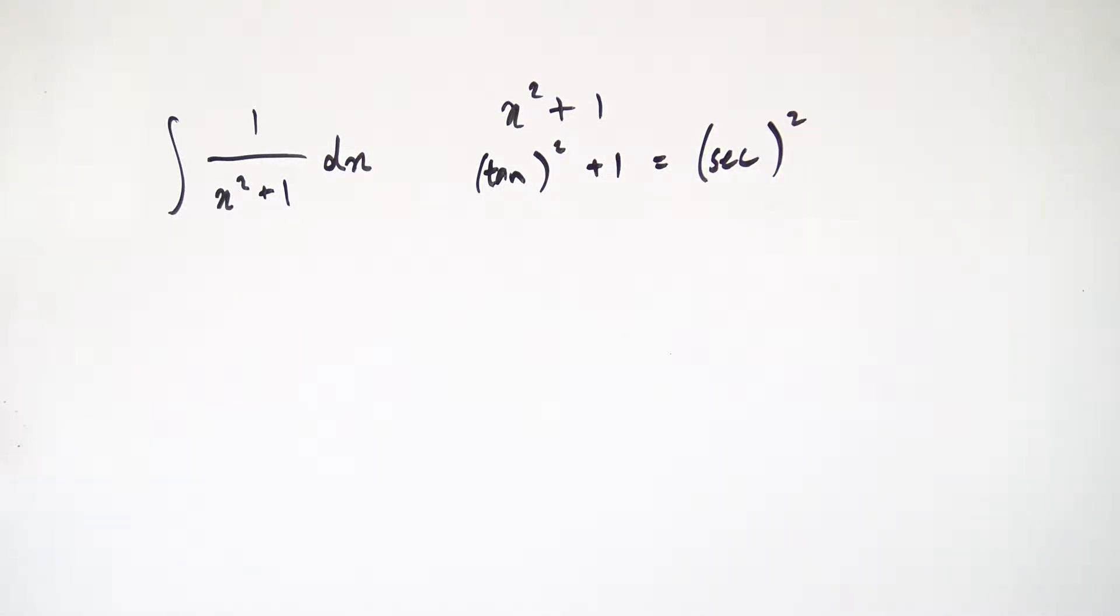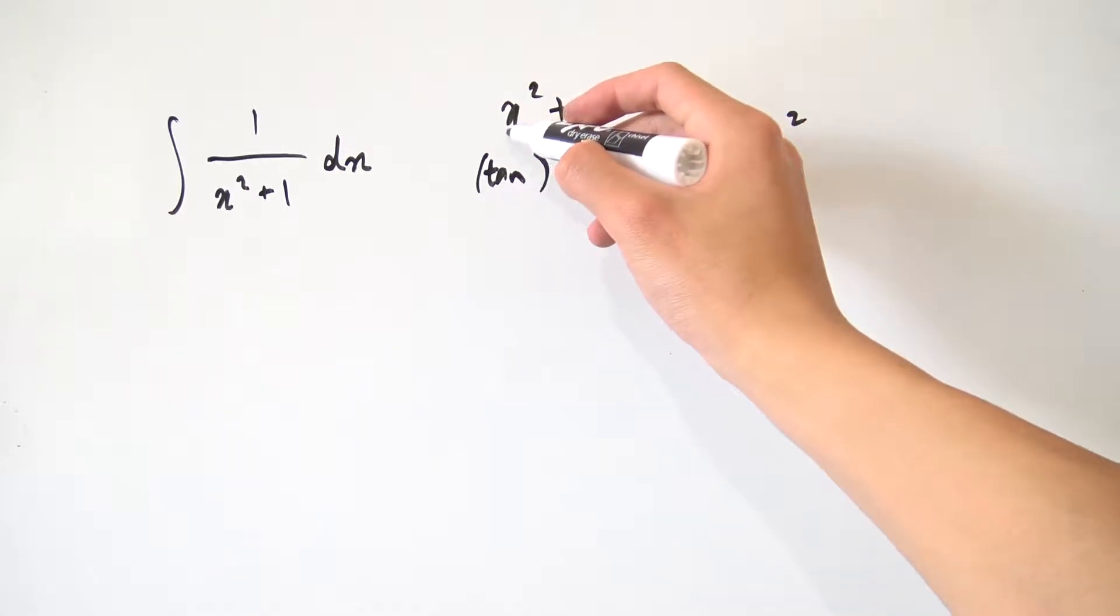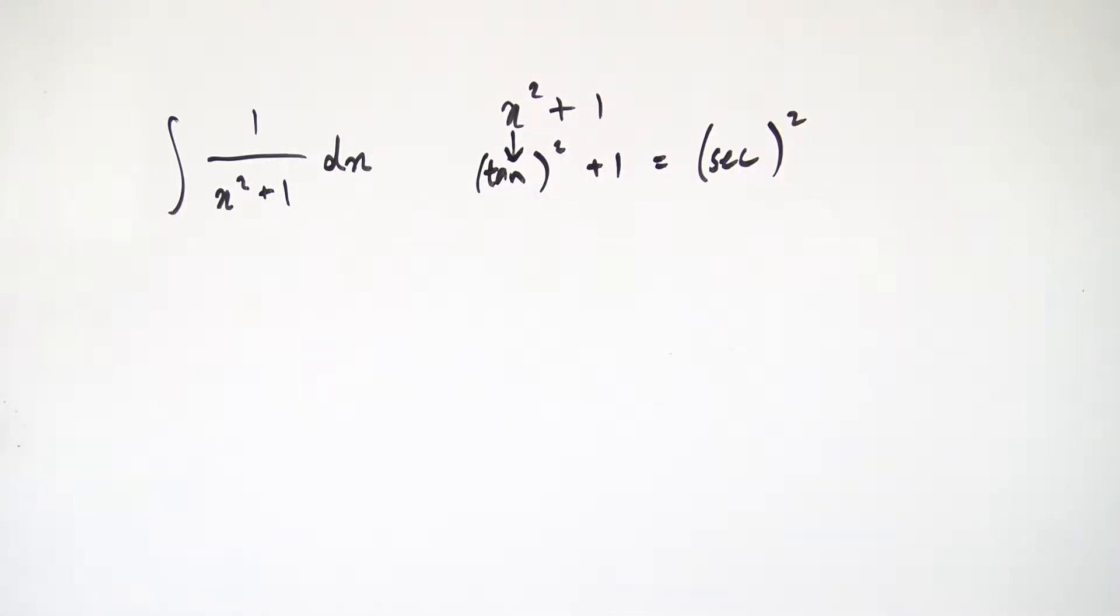So what we can actually do now is if we substitute x for our tangent, then once we do the substitution, we're going to end up in the denominator with tangent squared plus 1 and that actually nicely simplifies down to secant squared of something. So let's actually do the substitution right now, let's let our x be equal to the tangent of some new angle, let's just call it theta for now.